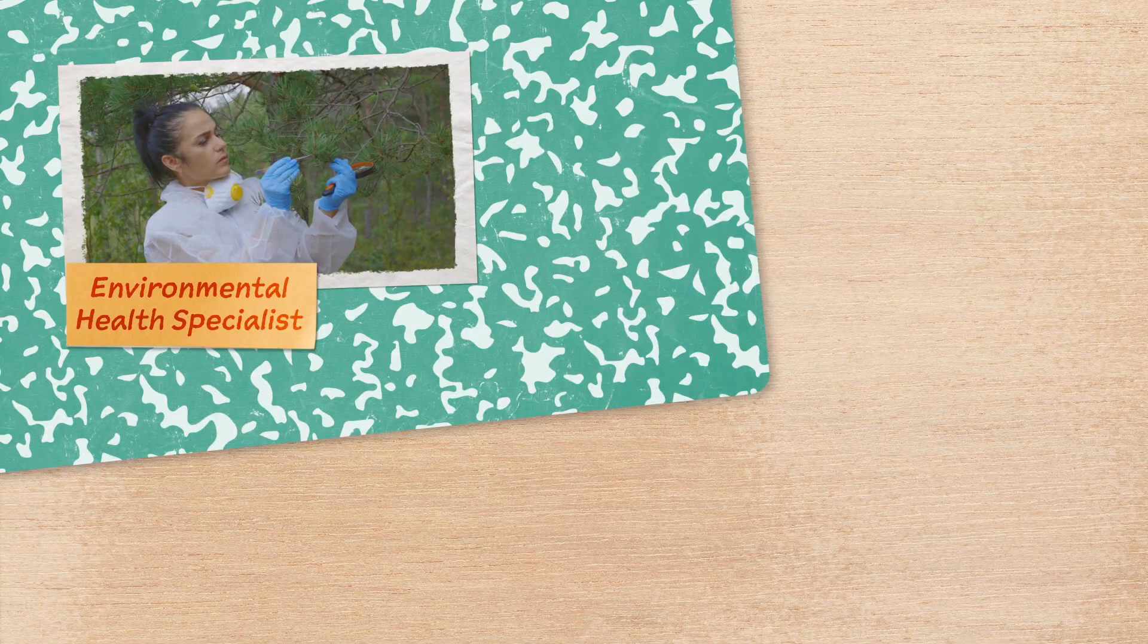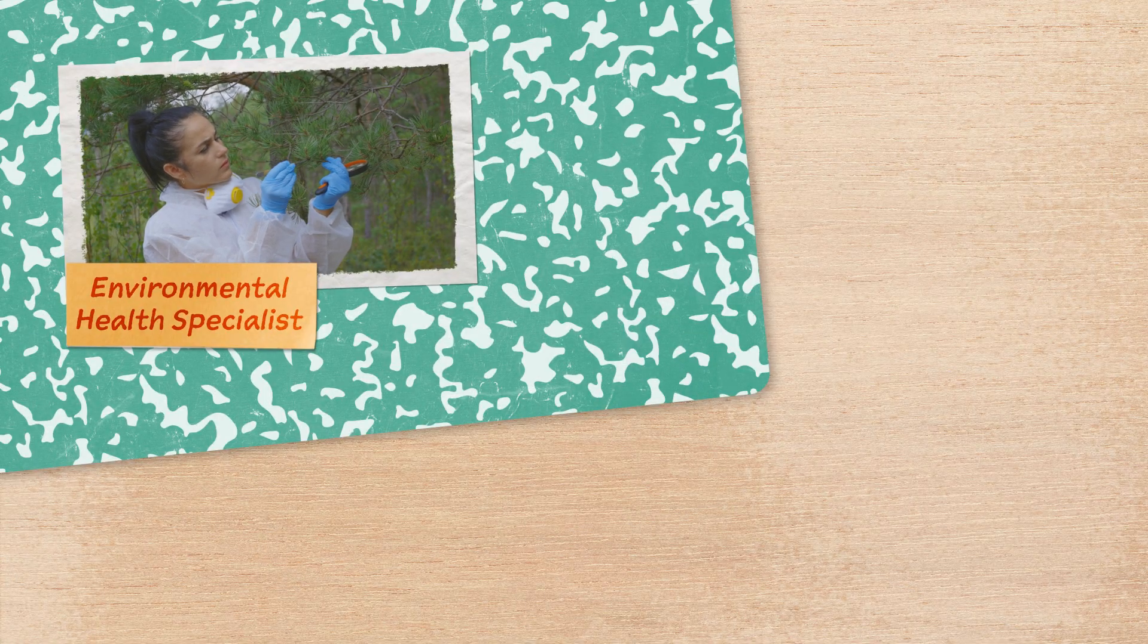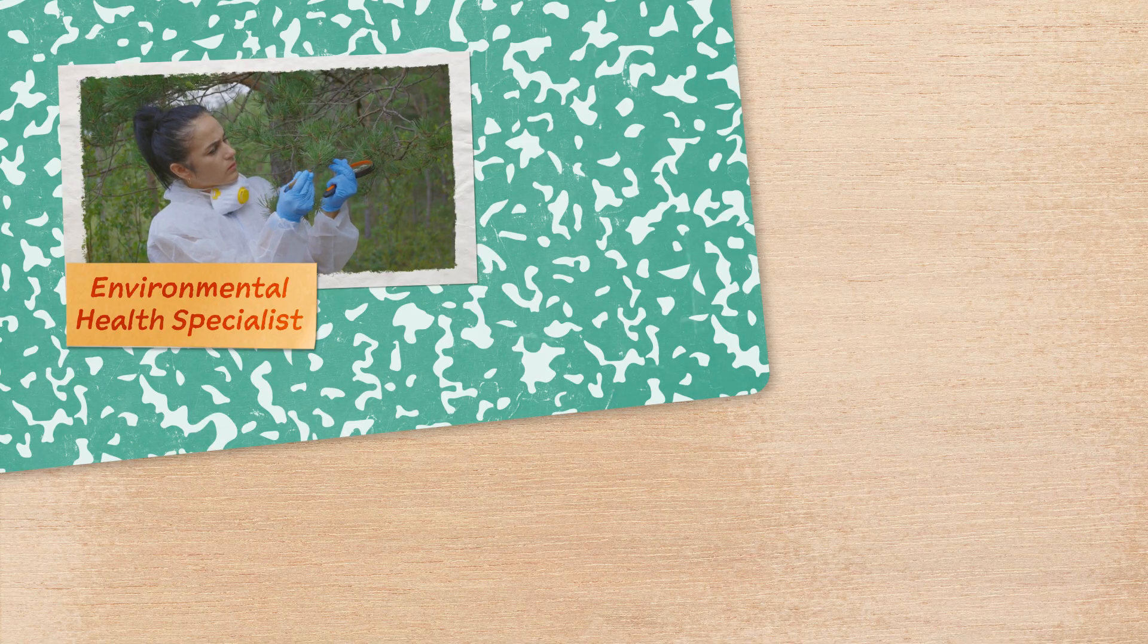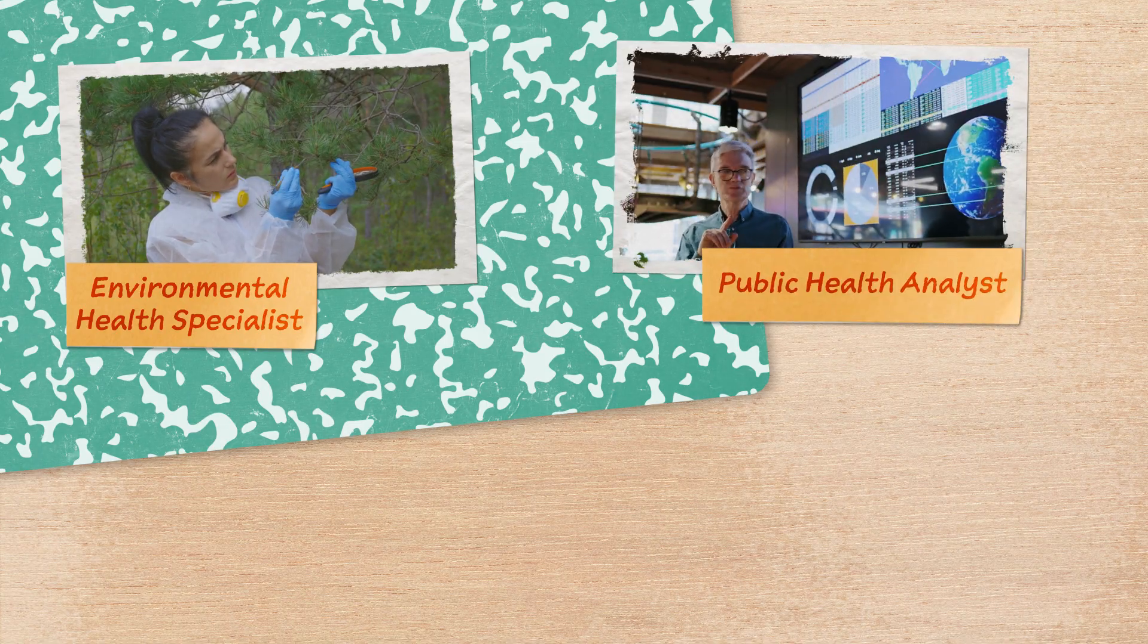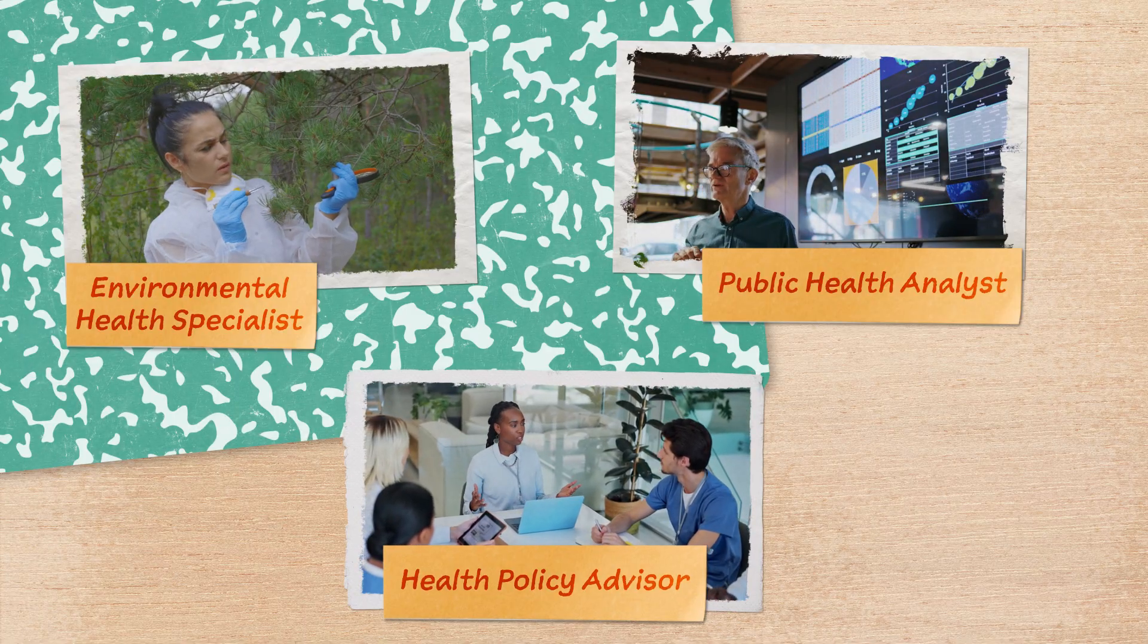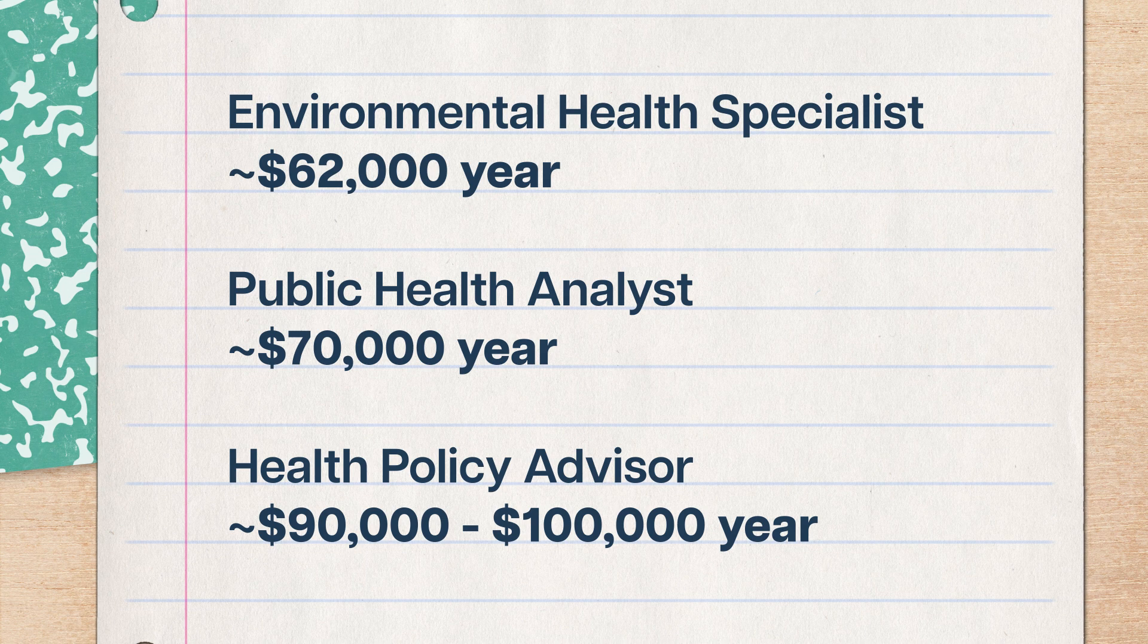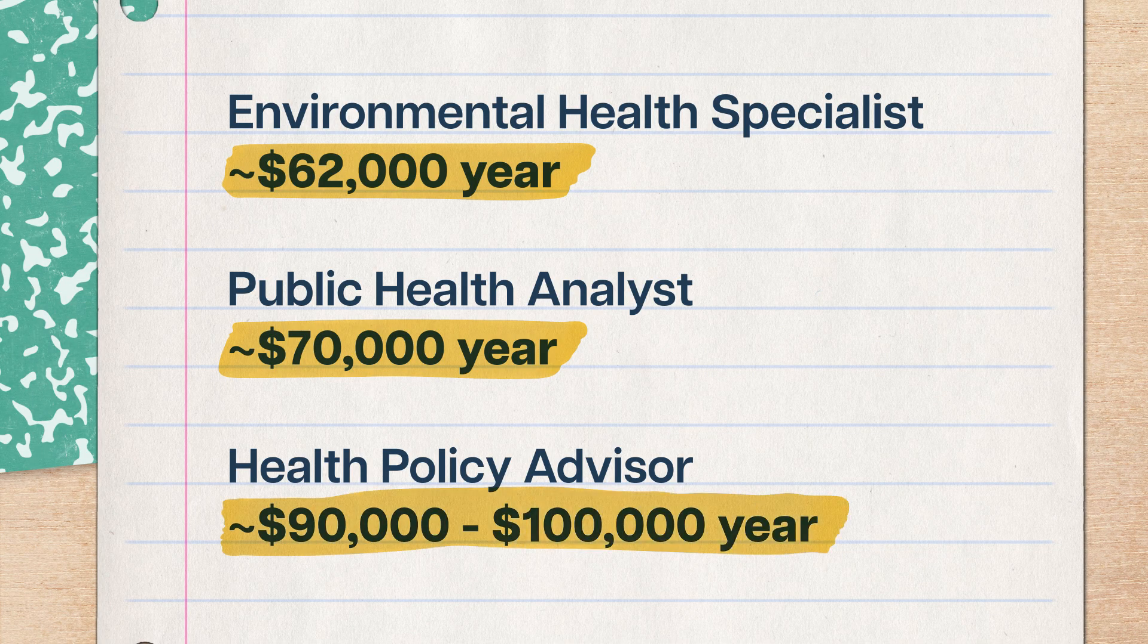Or if you're drawn to the policy side of things, you could become an environmental health specialist, who makes sure built and natural environments stay safe for the people who use them. You could also become a public health analyst or health policy advisor, using insights from data to make sure policies actually work. Environmental health specialists usually make around $62,000. Public health analysts make around $70,000. And those policy jobs can get you something in the high 90s or low 100s.